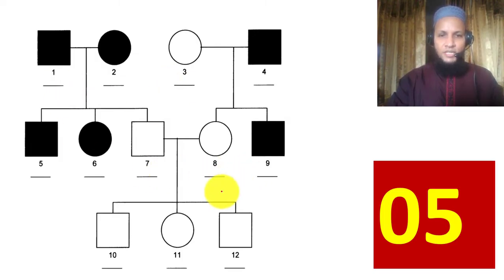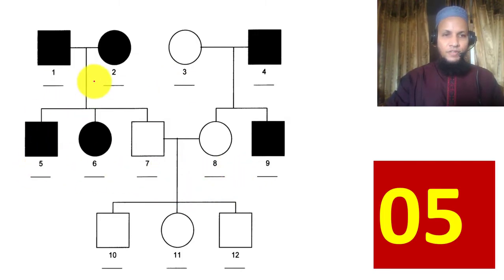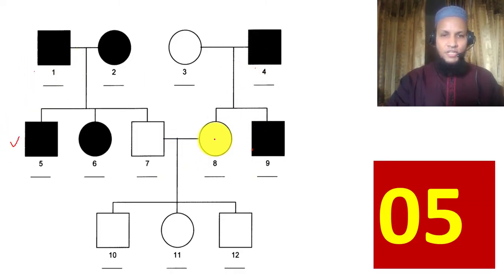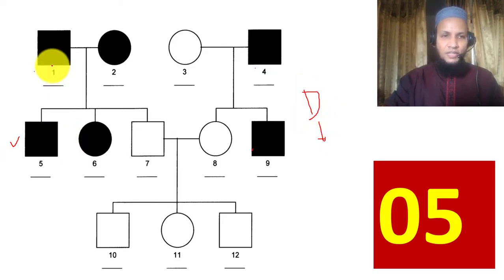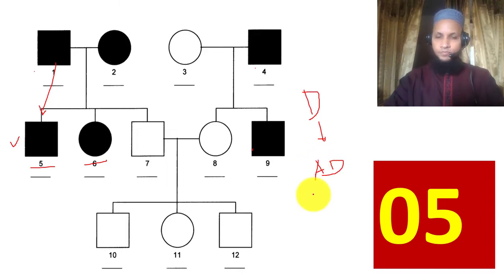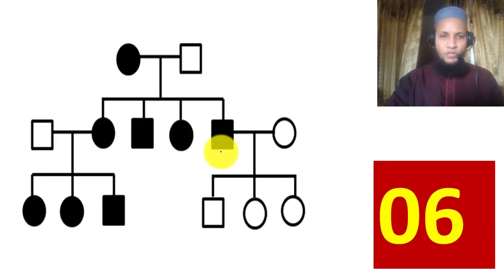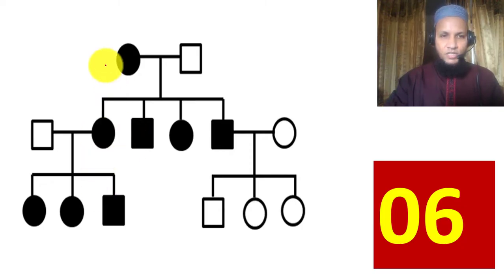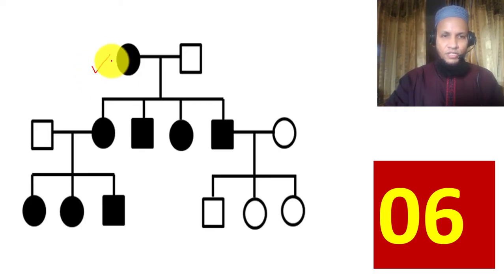Example 5: All affected persons have affected parents, there is no skipping of generation — this is dominant. Both male and female are affected, and there is male-to-male transmission. Therefore this is autosomal dominant.